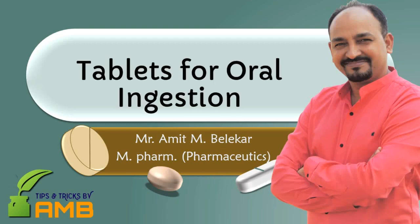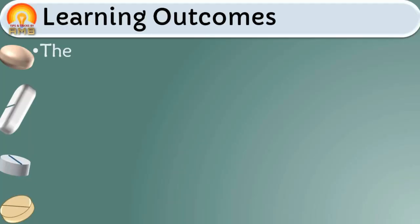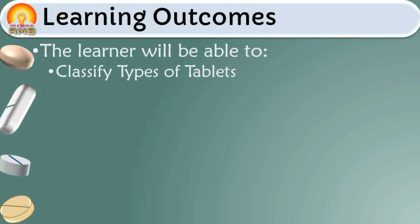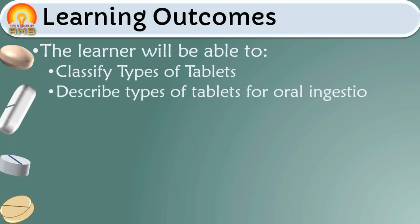After going through this video, the learner will be able to classify types of tablets and describe types of tablets for oral ingestion. Already we discussed that tablets are solid flat or biconvex disc unit dosage forms prepared by compressing a drug or a mixture of drugs with or without excipients. Now let's see the types of tablets.